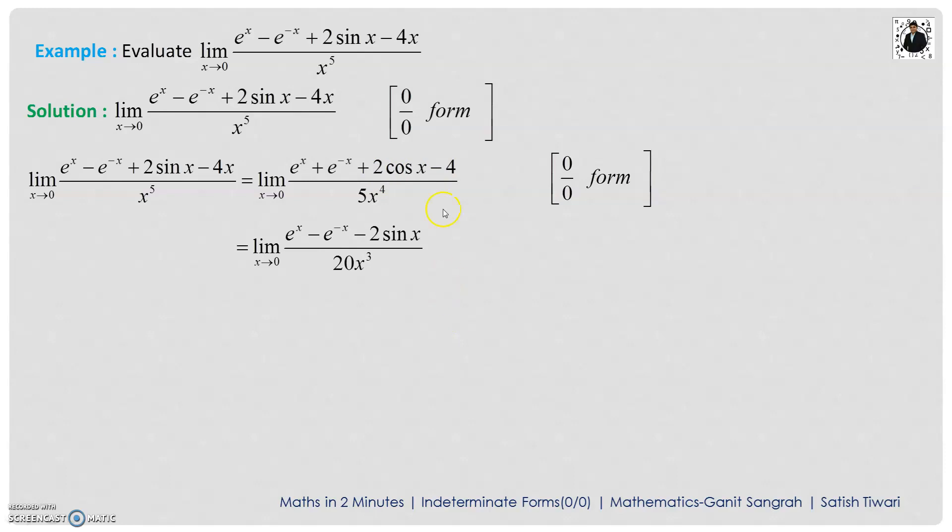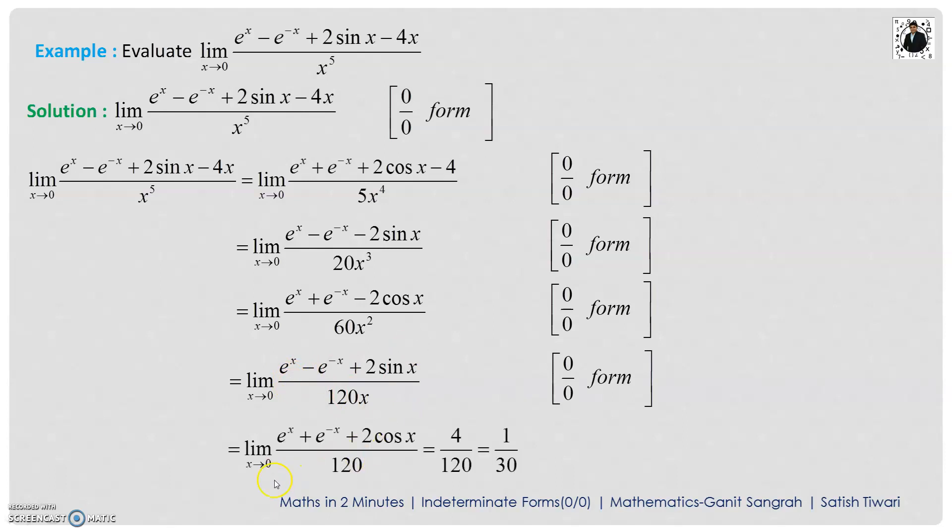So here we differentiate the numerator separately and the denominator separately. Again, we are getting the 0 by 0 form. Okay. Apply L'Hôpital's rule. We get this quantity. Again, it is in the 0 by 0 form. Apply L'Hôpital's rule. Again, it is in the 0 by 0 form. Again, apply L'Hôpital's rule till we get that finite value of the limit.